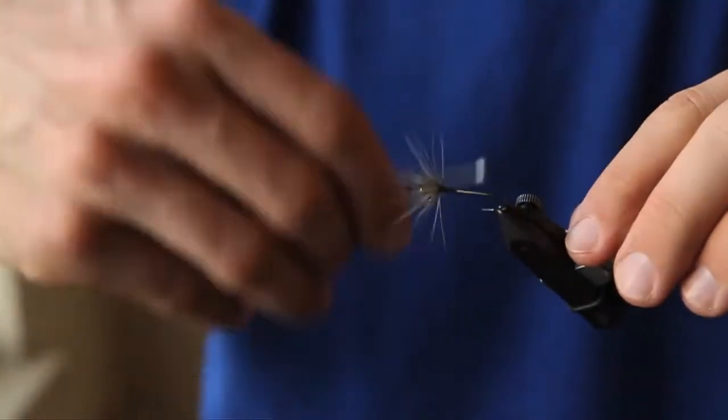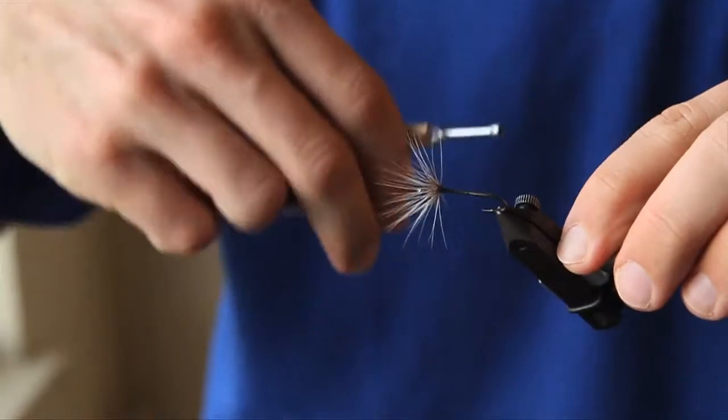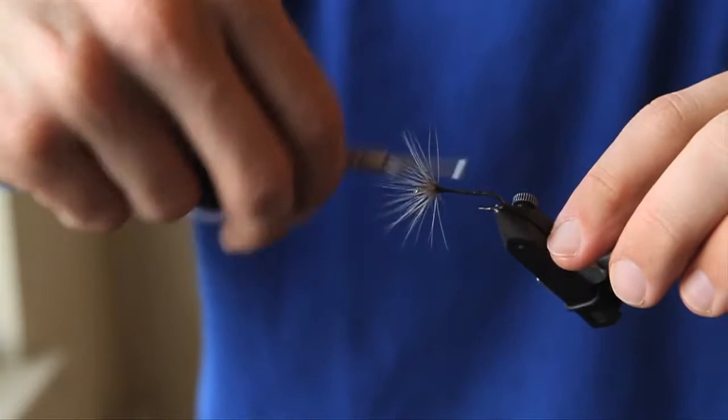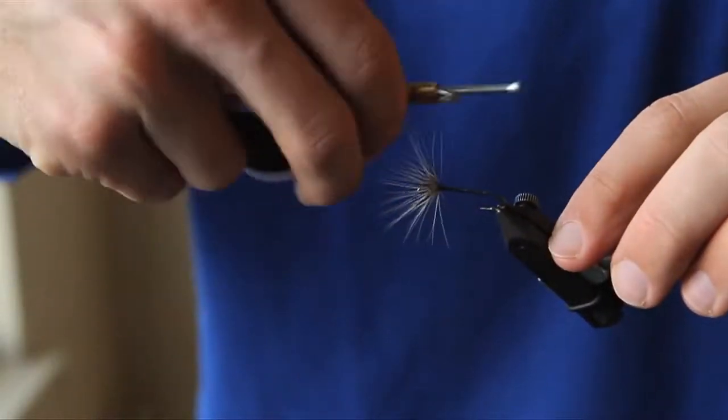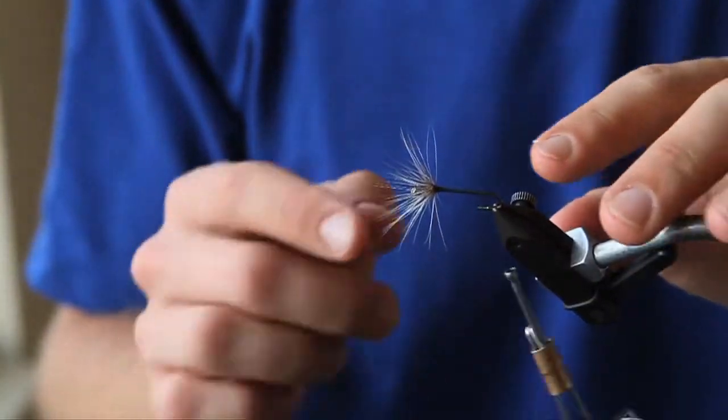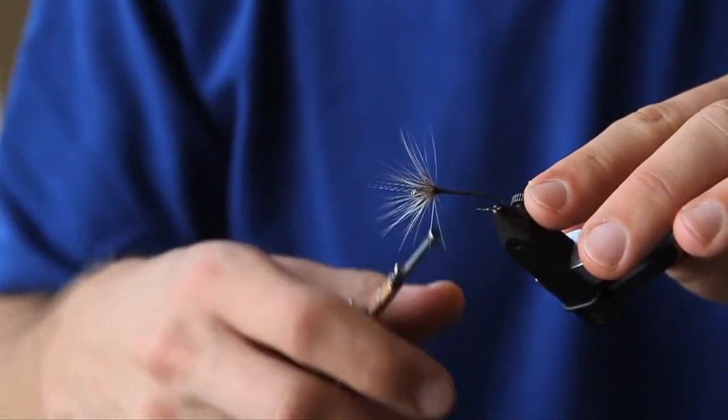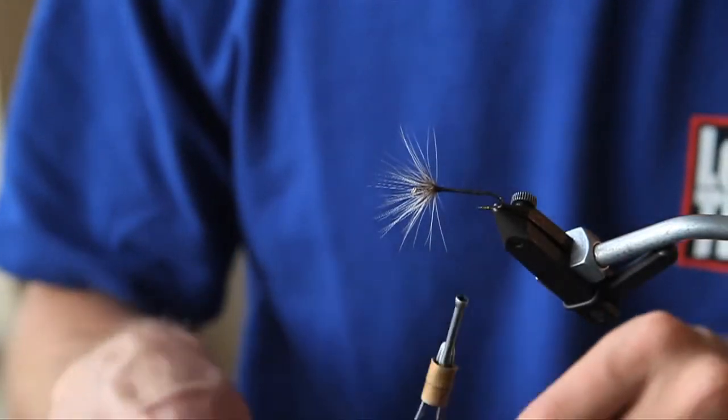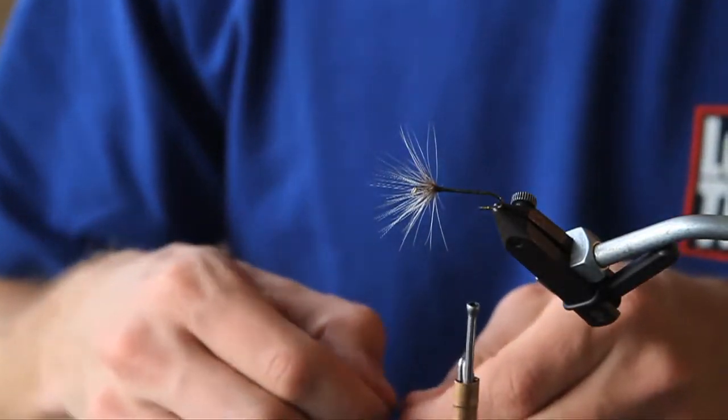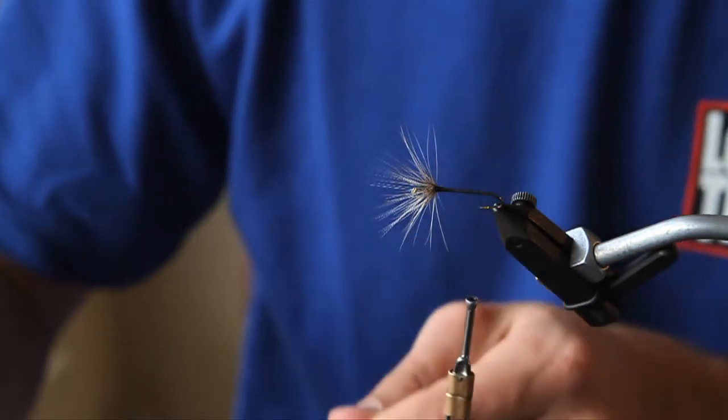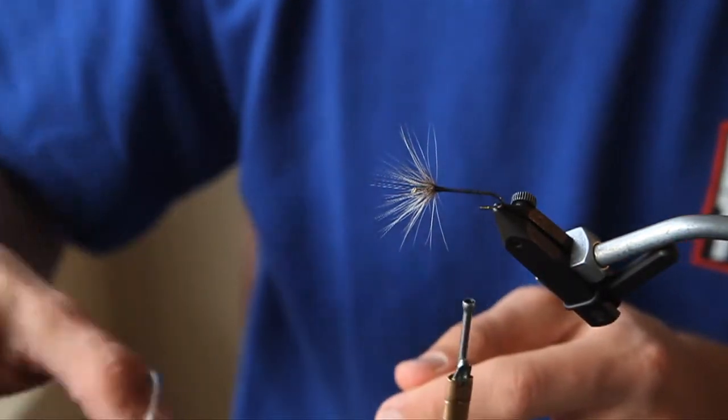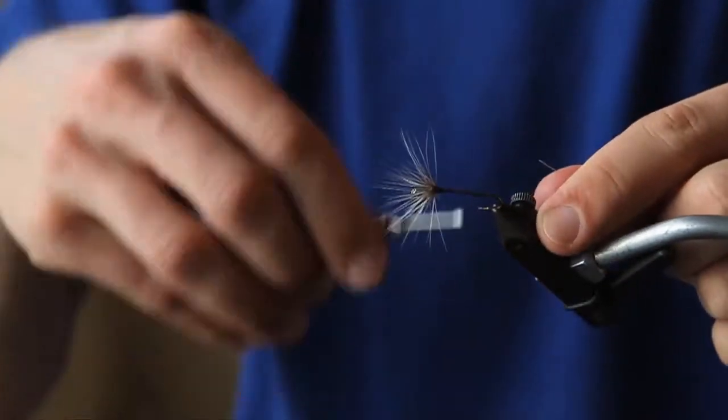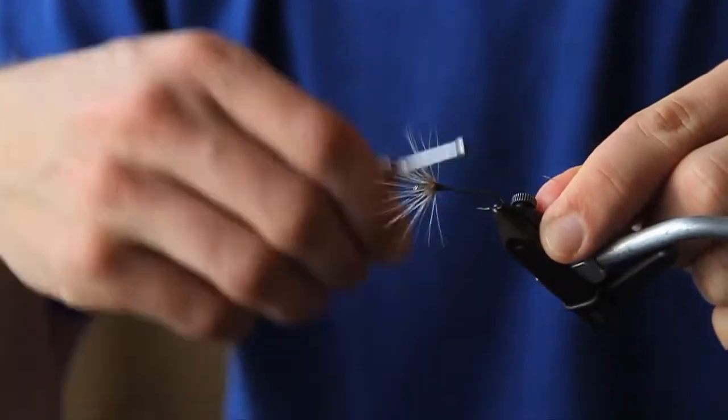And then I'll build a body on the hook. And all my body consists of is thread. And one thing that you can keep in mind here as a tip: if you want to have a fly that is heavier, use more thread. Just do more wraps, do twice as much wraps as you need to. And that actually can very effectively help sink the fly as well. So in this case, I'm just going to have a not very heavy fly necessarily. I just want to have enough of a body there to make it look like a bug underwater.